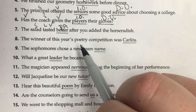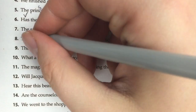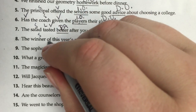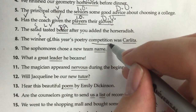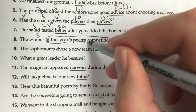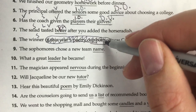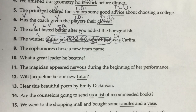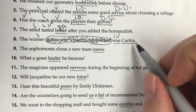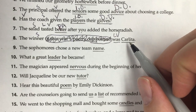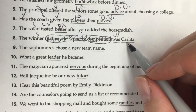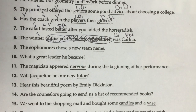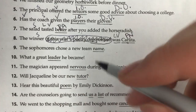Number eight: 'The winner of this year's poetry competition was Carlita.' Here is our subject, and then there's a long prepositional phrase that separates the subject from the verb. Prepositional phrases include a preposition, the object of the preposition, and all the words in between — this whole part needs to be disregarded, because prepositional phrases can never be any part of the sentence. Here is our linking verb 'was' — was and were are always linking verbs. The winner equals Carlita, so Carlita is either a predicate nominative or predicate adjective. Since Carlita is a person, a person, place, or thing — a noun — this is a predicate nominative.